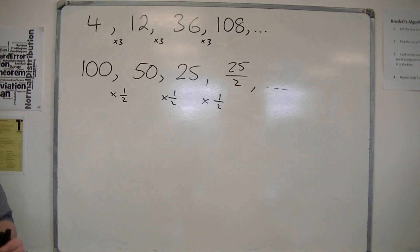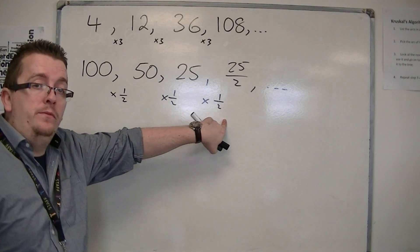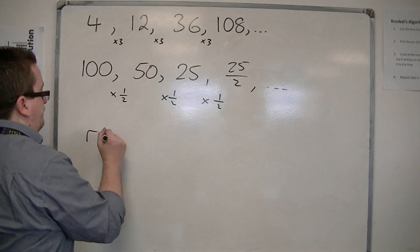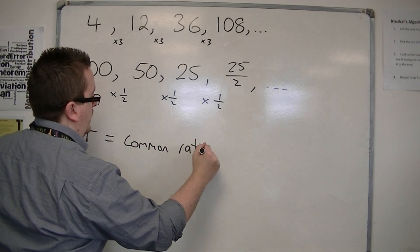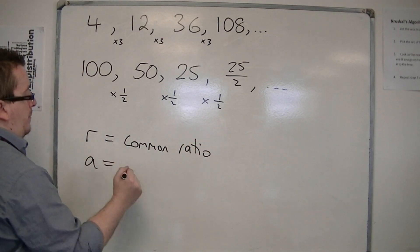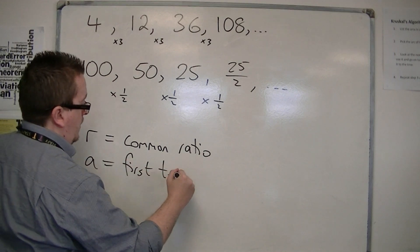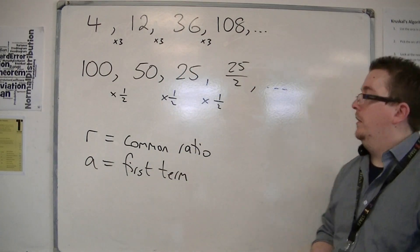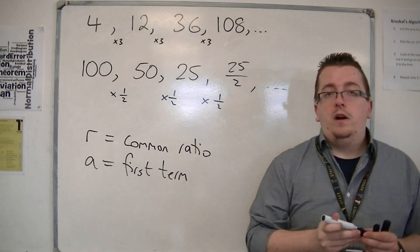So as long as you've got a common ratio, as it's known, which will be referred to as r, and a starting number, a, then with that we can generate the sequence. So we have a first term and a common ratio, r.